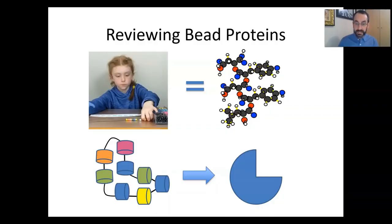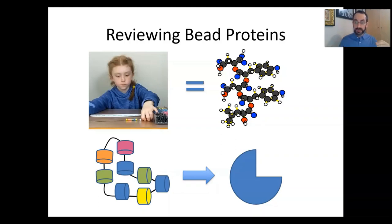Let's put what Zoe just did into context. Zoe got a series of instructions and used them to put a string of colored beads on a string in a specific order. That string of beads represented a protein. Thinking back to the animals unit, proteins are one of the four different types of organic molecules that all living things are made of. Proteins are a polymer made up of monomers called amino acids. There are actually 20 different amino acids commonly used by life on Earth, and when put together they make a protein.